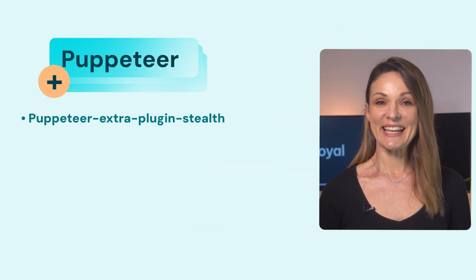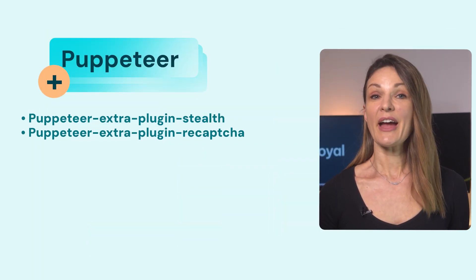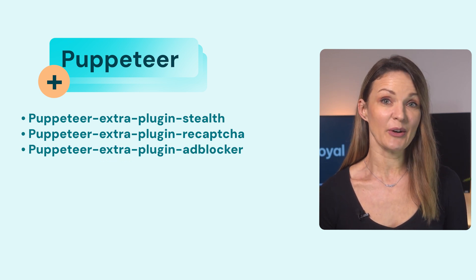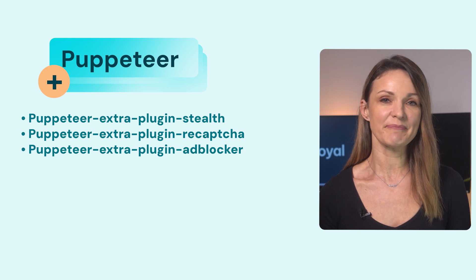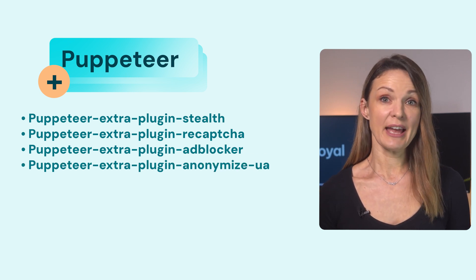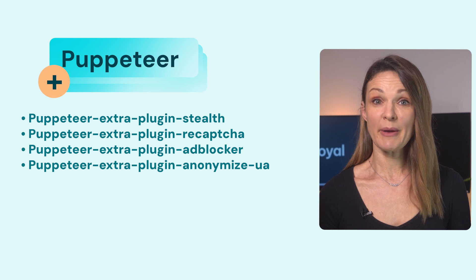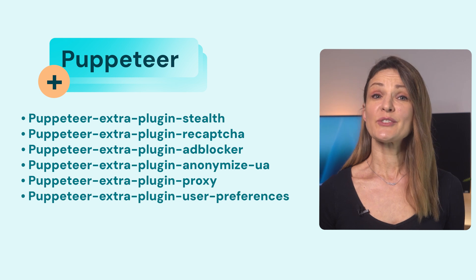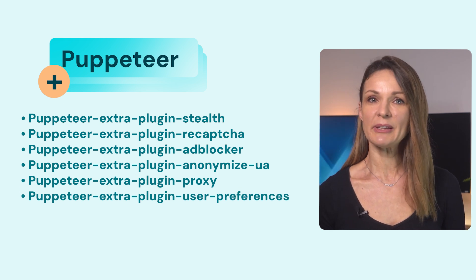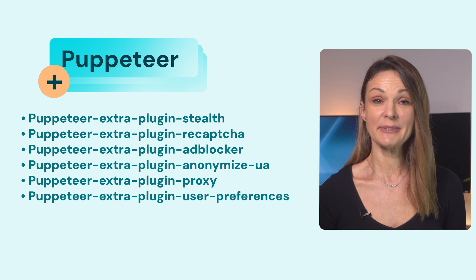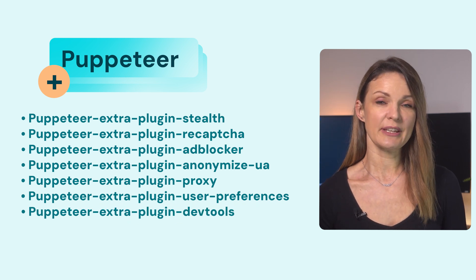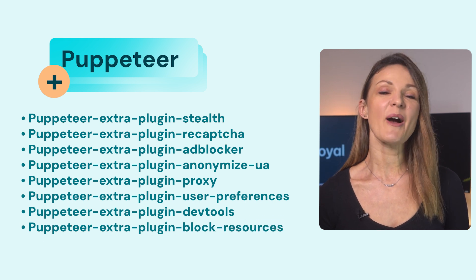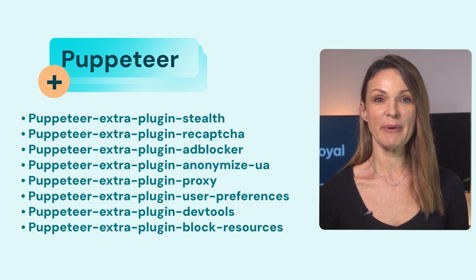Puppeteer Extra Plugin Stealth helps you avoid bot detection. Puppeteer Extra Plugin ReCAPTCHA lets you automatically solve reCAPTCHAs. Puppeteer Extra Plugin Ad Blocker blocks ads to speed up your scraping. Puppeteer Extra Plugin Anonymize UA anonymizes user agents for better privacy. Puppeteer Extra Plugin Proxy makes your proxy integration seamless. Puppeteer Extra Plugin User Preferences lets you simulate user preferences for website testing. Puppeteer Extra Plugin DevTools enables browser debugging with DevTools. Puppeteer Extra Plugin Block Resources blocks unnecessary resources to speed up page loading.